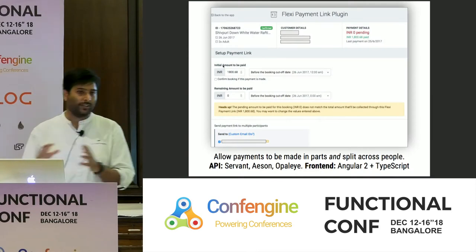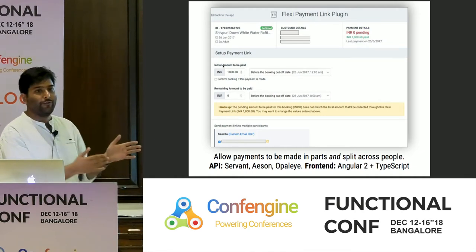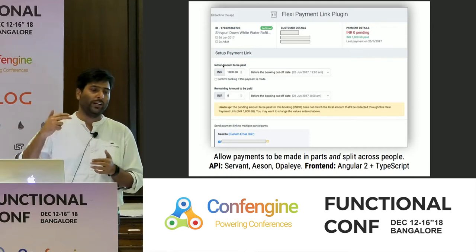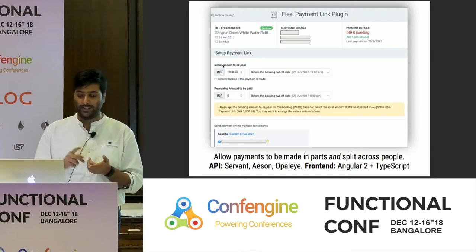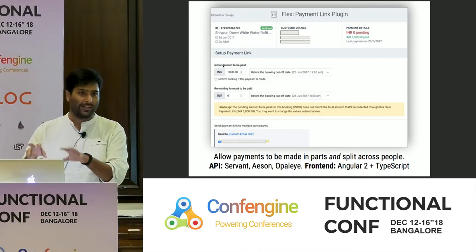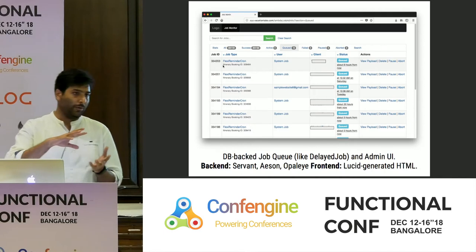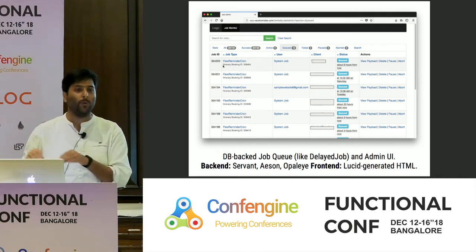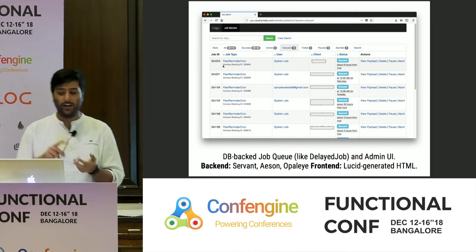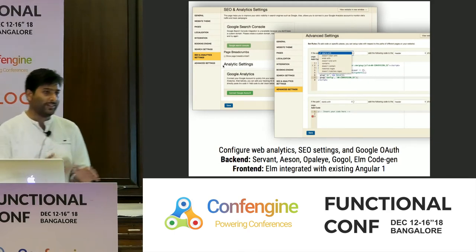What is the kind of stuff that we're building? The first thing we built with Haskell is a standard back-office admin for sending out payment links. It allows customers to split payments between themselves and pay on a schedule — you don't have to pay the entire amount upfront. The API for this was built in Servant, Aeson, and Opaleye — these are Haskell libraries. The front-end was built in Angular 2 and TypeScript. This was our first Haskell project in production. We also built a DB-backed job queue — something like delayed job didn't exist in Haskell, so we had to write our own and slap a UI on top.